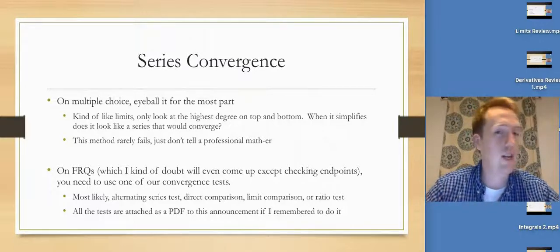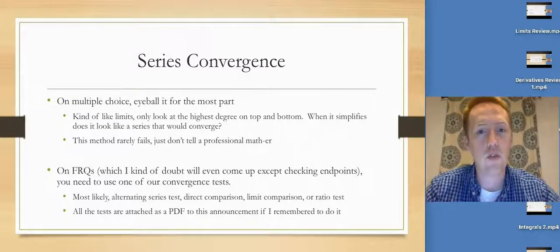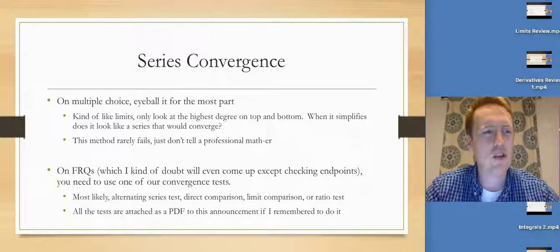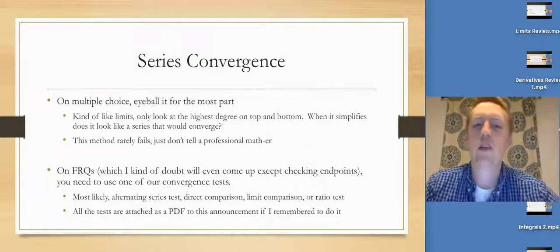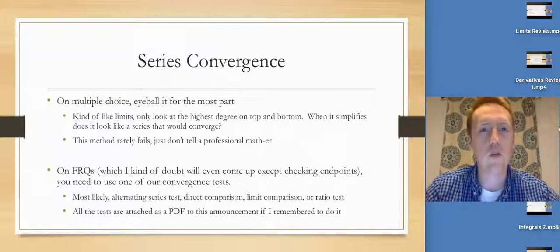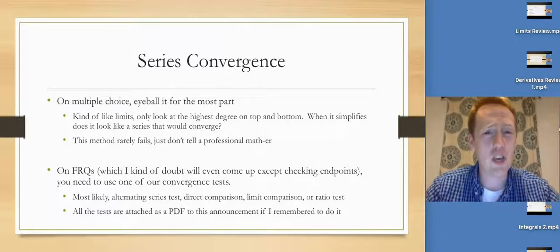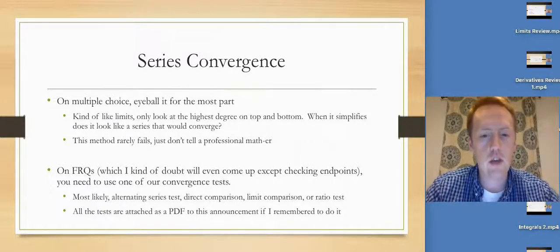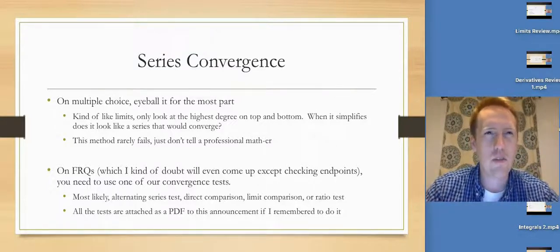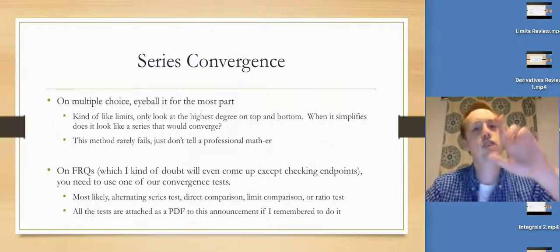On FRQs, which I kind of doubt are going to come up — except for when you check the endpoints of an interval of convergence — it's really not going to come up too much. You're really just going to use the alternating series test, direct comparison, limit comparison, or ratio. The ratio test you're really only going to use to get intervals of convergence in the first place. I'll repost our tests PDF, provided I remember to do that. Fingers crossed.